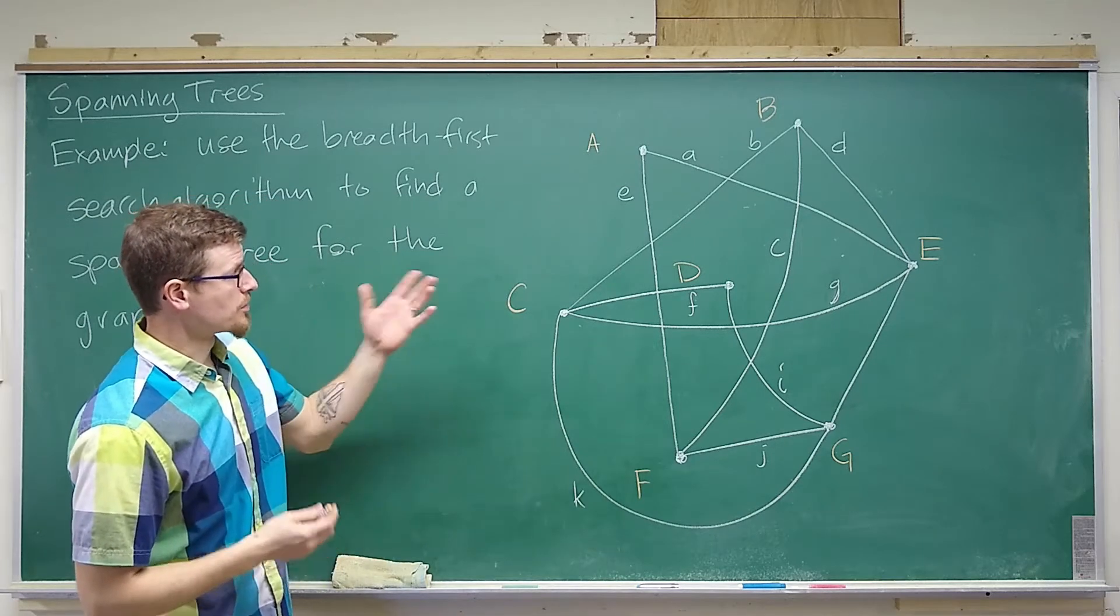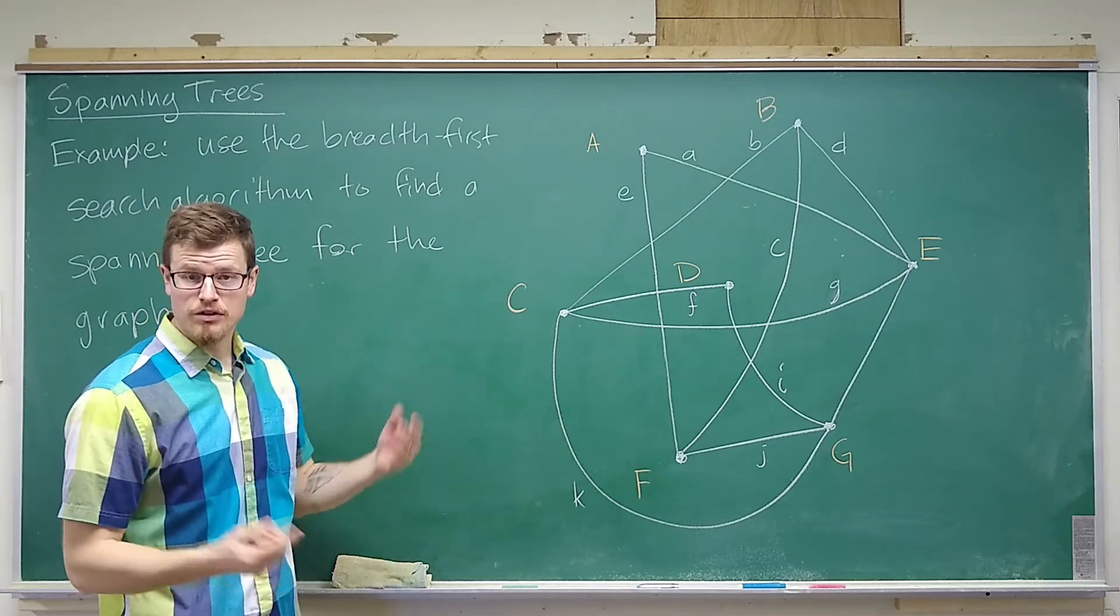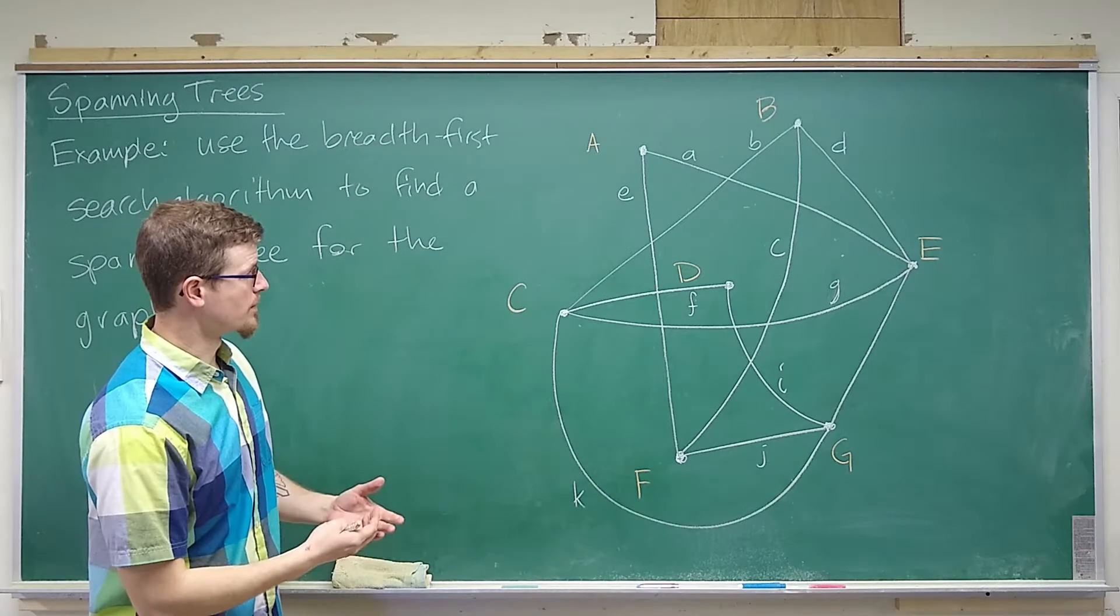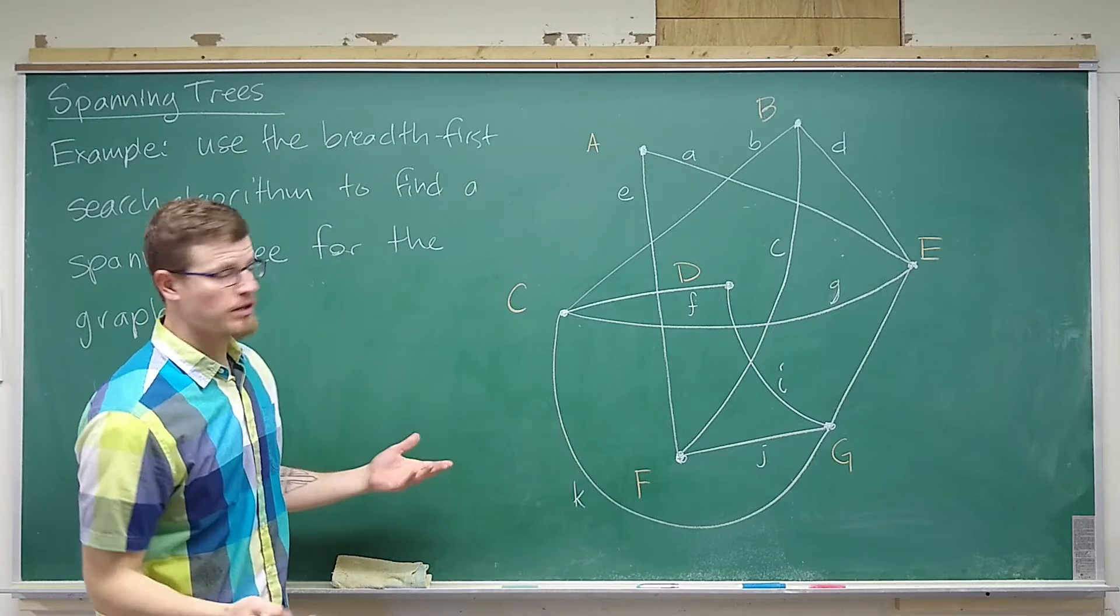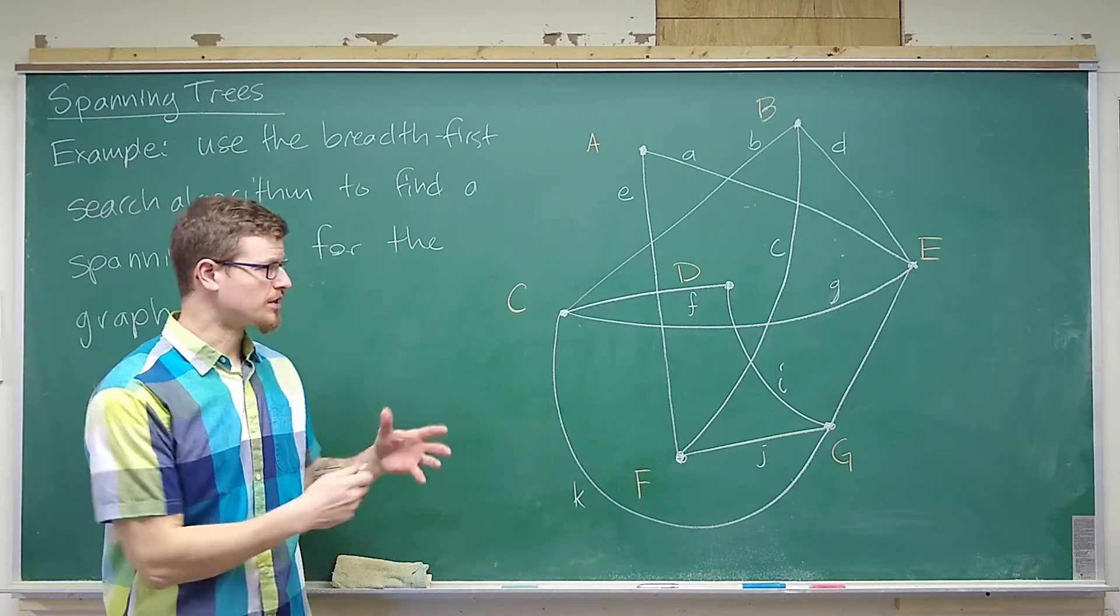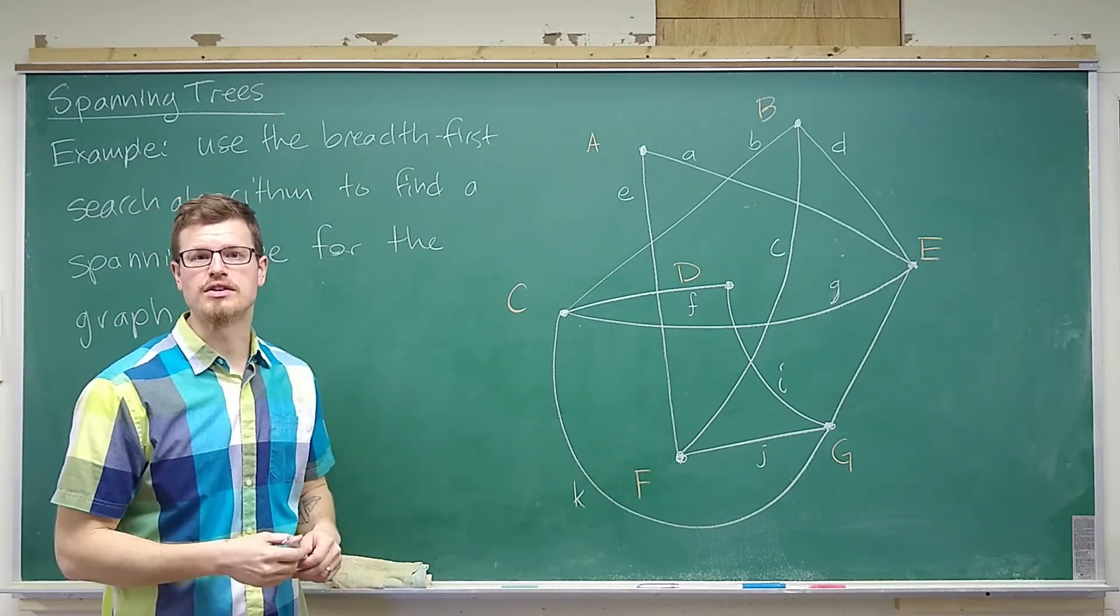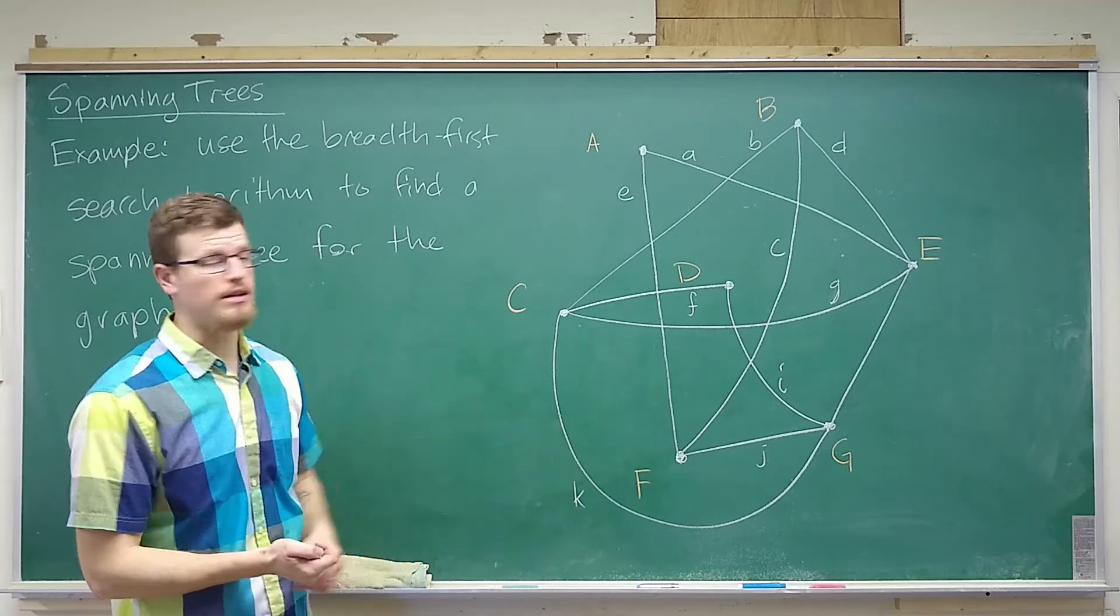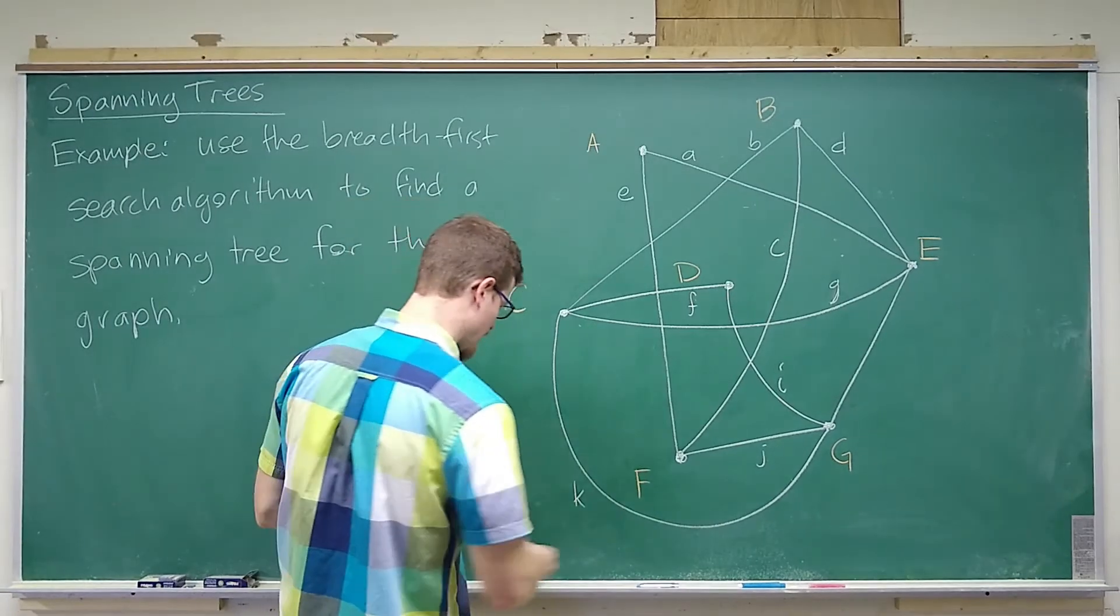But we want to make sure again that it's a tree, so it needs to be connected and it needs to contain all of the vertices and contain no cycles. Essentially we're just looking for a minimal number of edges to have a connected graph containing the same vertices.